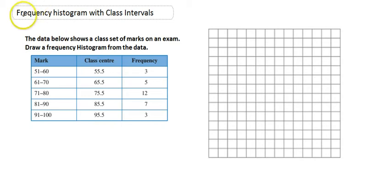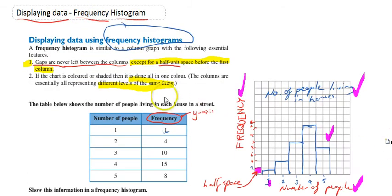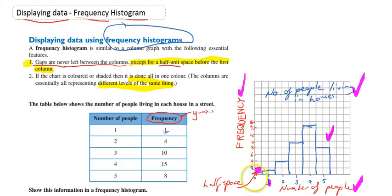In this one we're looking at a frequency histogram again. Hopefully you'll remember from a previous video that we've already looked at a frequency histogram once before — we were looking at the number of people in a house. I gave you all of that information, and I said don't forget the half space, the columns always have to touch, and make sure you put your labels on everything. All of this still applies for this next question.